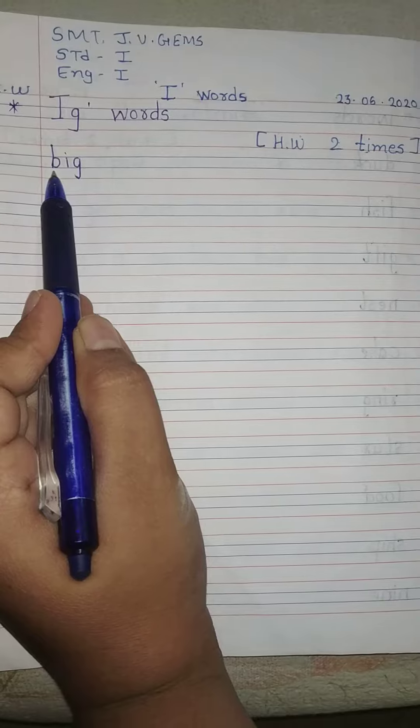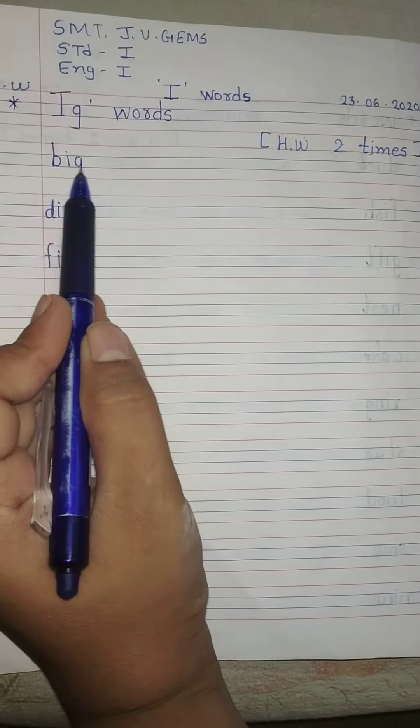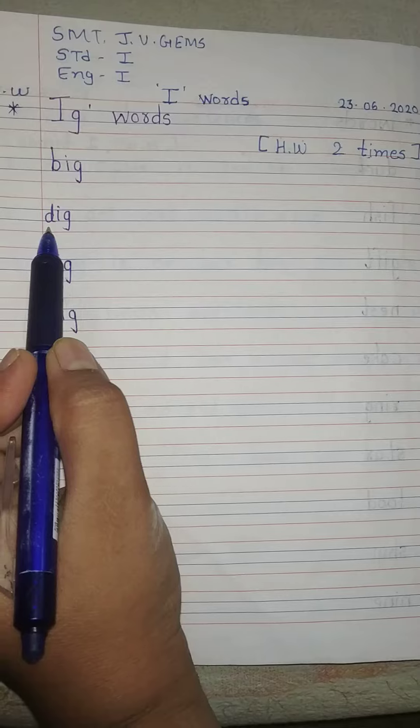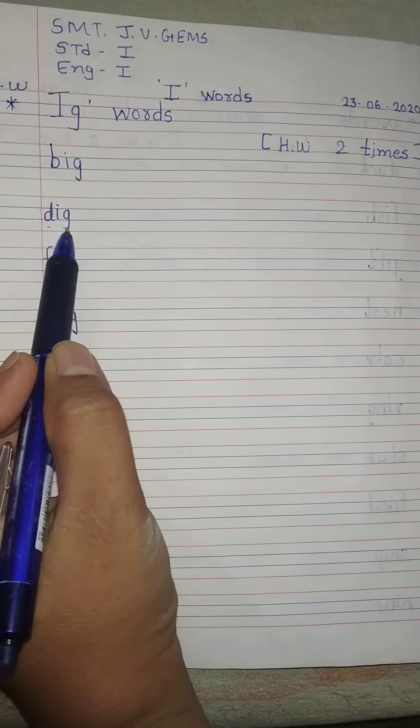B says B. B. Ig. big. B.I.G. big. D says D. D. Ig. dig. D.I.G. dig.